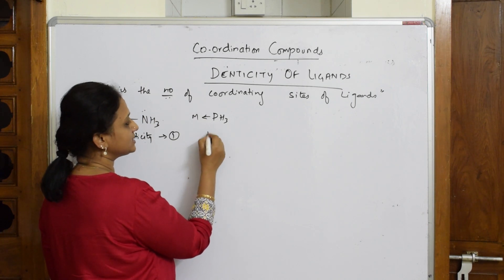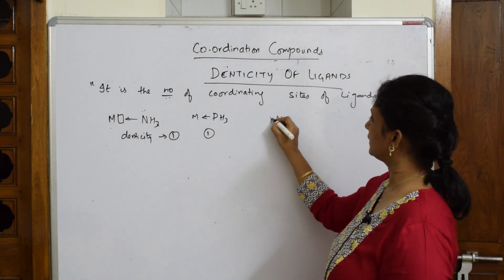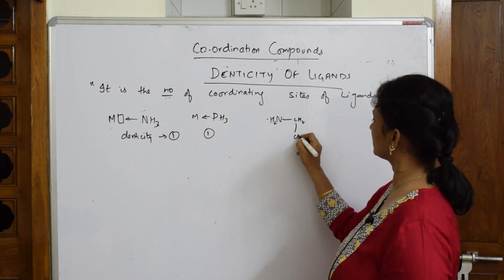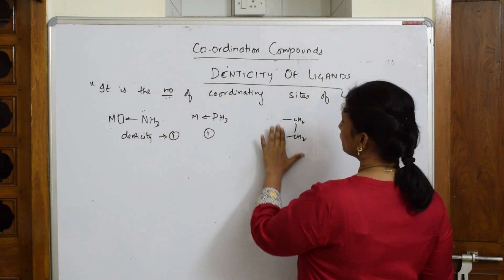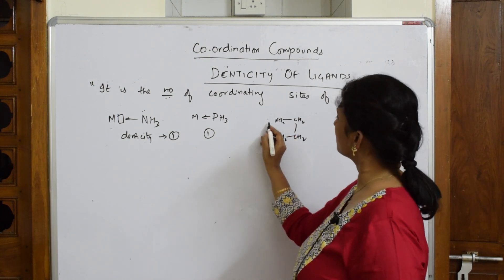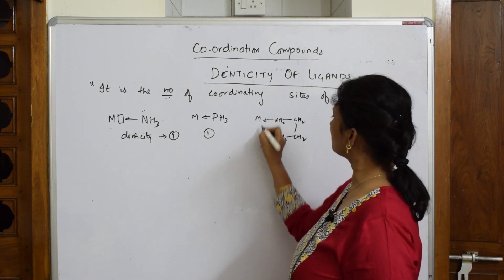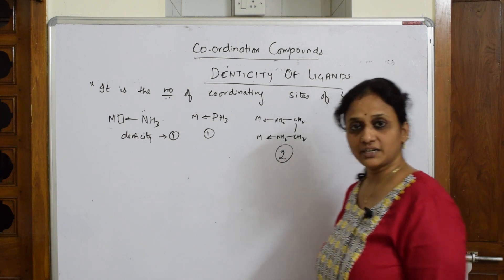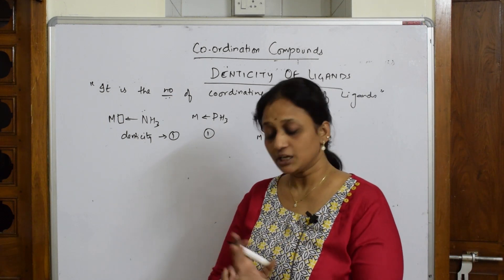Now suppose we have NH₂CH₂CH₂NH₂. Each nitrogen has a lone pair. So this ligand is attacking the metal atom from two sites — one from each nitrogen. Therefore, the denticity here is two. The number of sites from which a ligand attacks the metal atom is called its denticity.